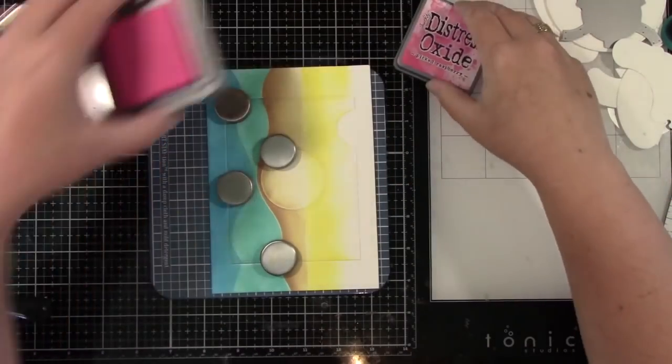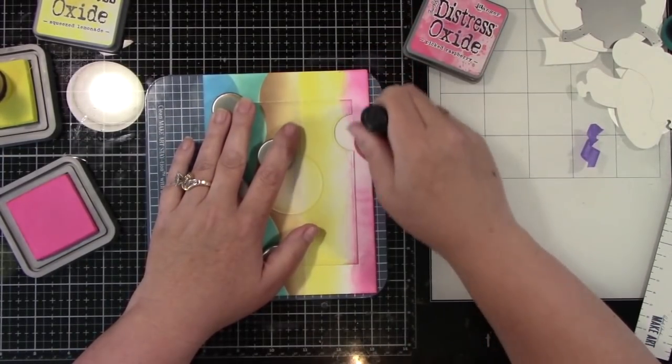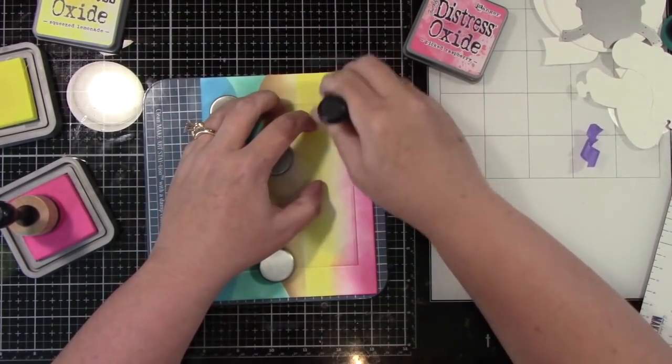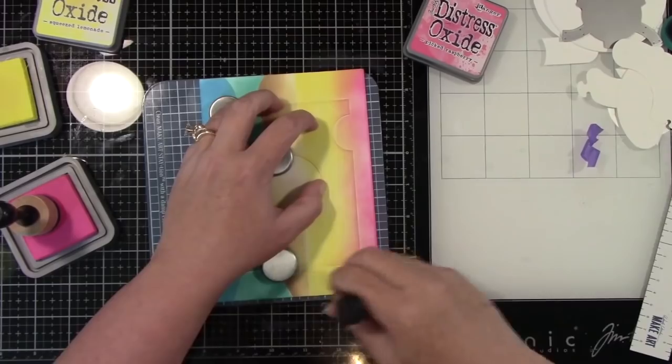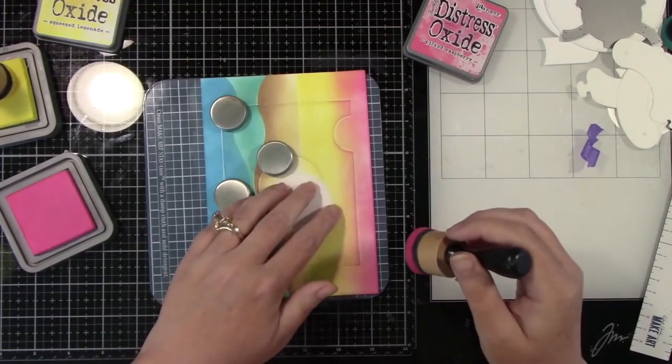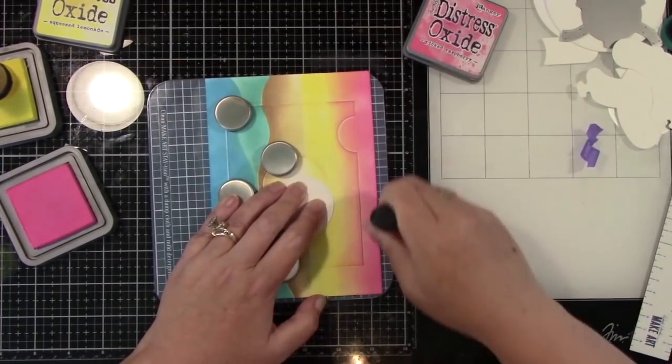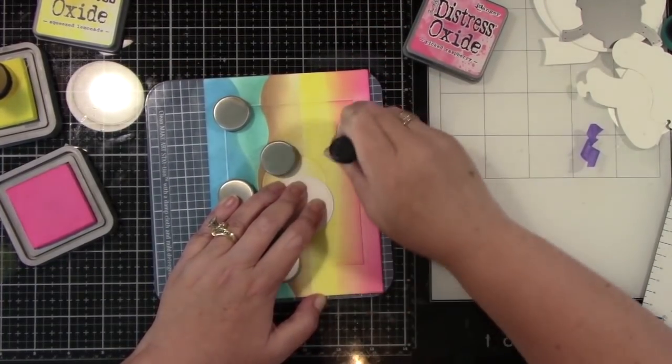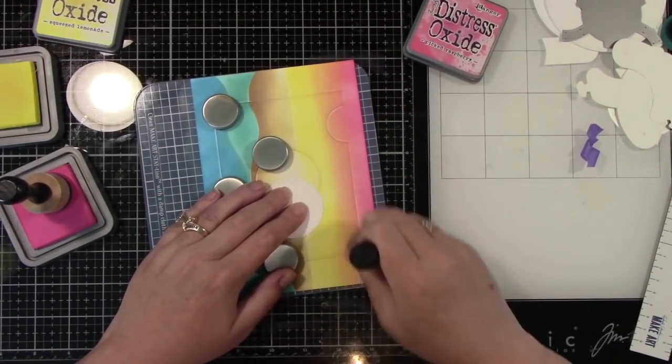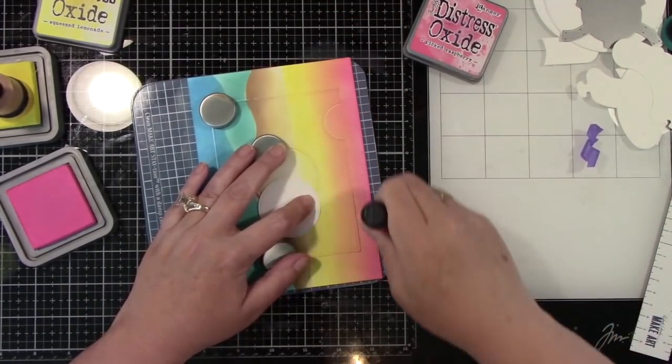Now I'm coming in with Squeezed Lemonade and then Picked Raspberry. And as the two blend, you're going to get this really beautiful orange. This to me just felt like this needed to be kind of a sunset sky. This card is so colorful and then when you get all those really cute lawn fawn critters, they're just darling. So just keep blending until you get the color that you want. I really didn't need to mask off anything here because it was a straight line and everything is blending wonderfully.